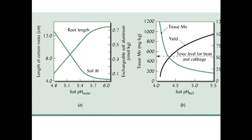Here are two graphs. On the left, we have length of cotton roots on the y-axis and soil pH and exchangeable aluminum on the x-axis. We see an inverse relationship between aluminum availability and root growth related to soil pH: as soil pH increases, exchangeable aluminum decreases, and root length increases. The graph on the right shows the same relationship but with manganese and soil pH.